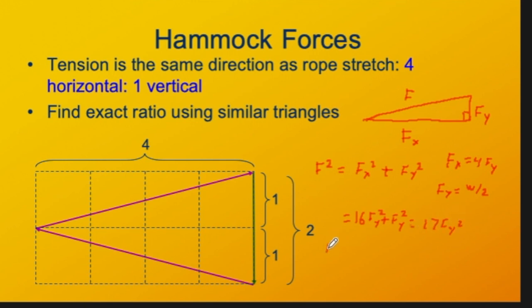F itself is the square root of that, the square root of 17 times F of Y. Well, remember F of Y is W over two. The square root of 17 divided by two times the weight.